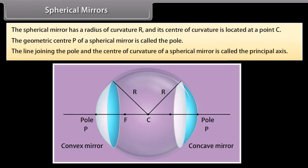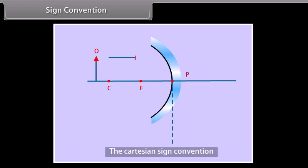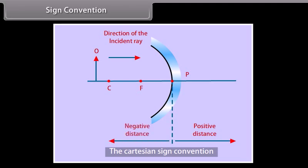The line joining the pole and the center of curvature of a spherical mirror is called the principal axis. The distances measured in the direction of the incident ray are taken to be positive, and those measured opposite are taken to be negative. The heights measured upwards are taken to be positive, and those measured downwards are taken to be negative.